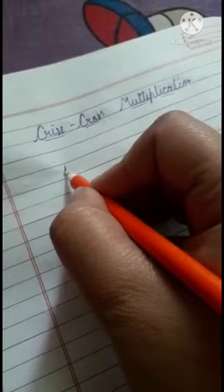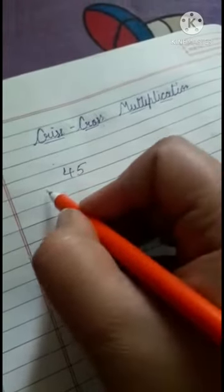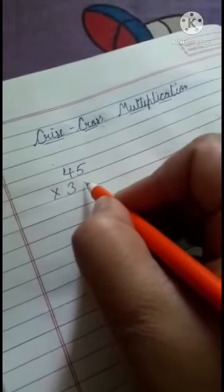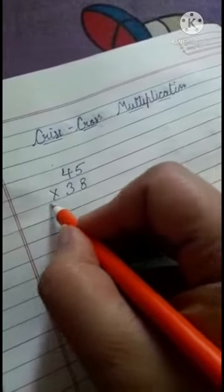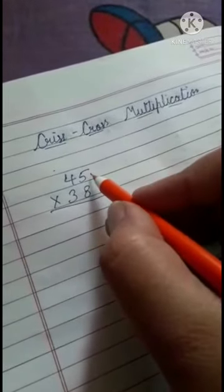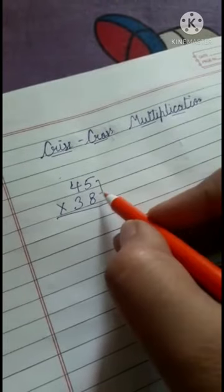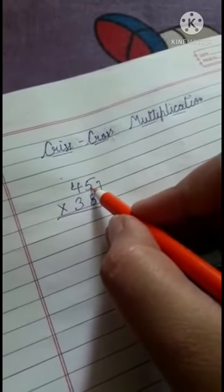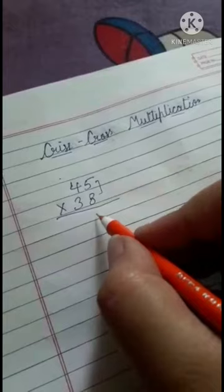Students, today I am going to teach you the criss-cross multiplication method. Suppose we have 45 multiply by 38. First, what we have to do is multiply these numbers. So 8 times 5 is 40.